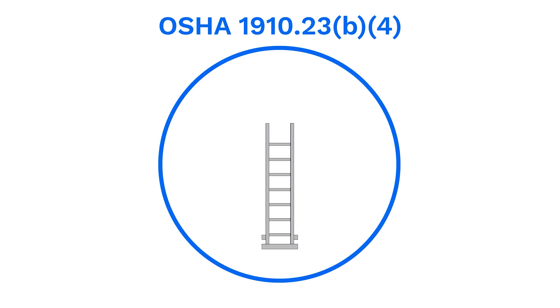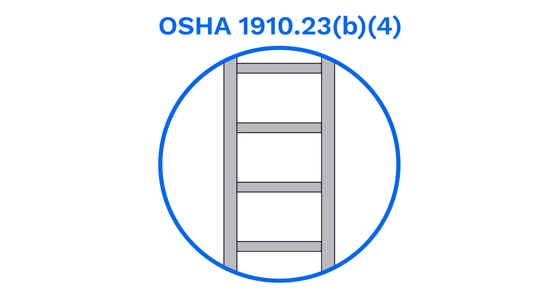Number two, ladder rung width is 16 inches. OSHA states that ladder rung steps and cleats need to have a minimum clear width of 16 inches for fixed ladders. You'd be surprised how many times our inspection teams still see ladders that do not meet this minimum standard.